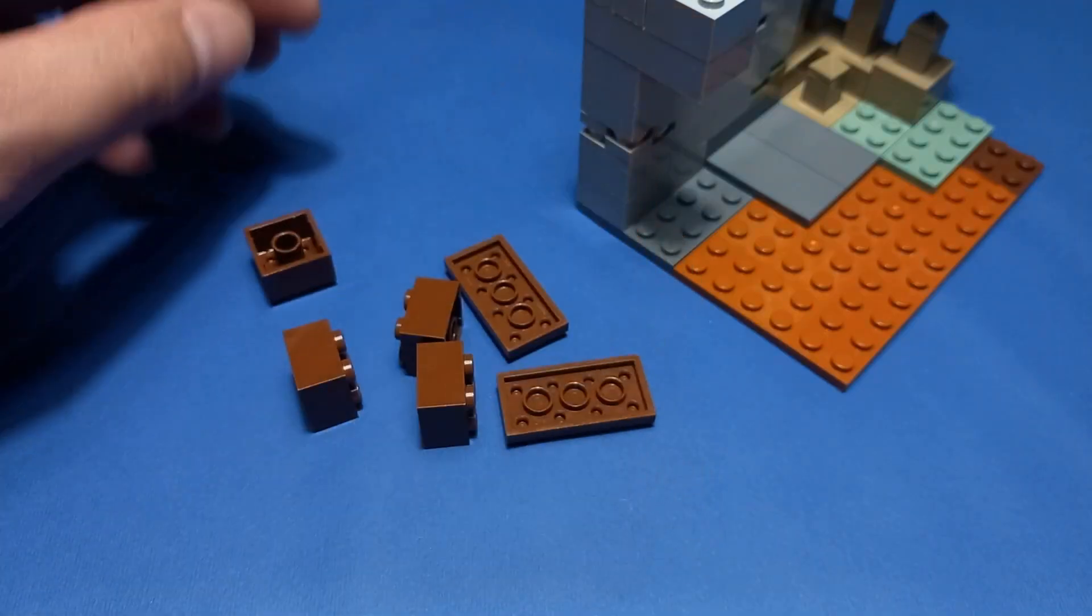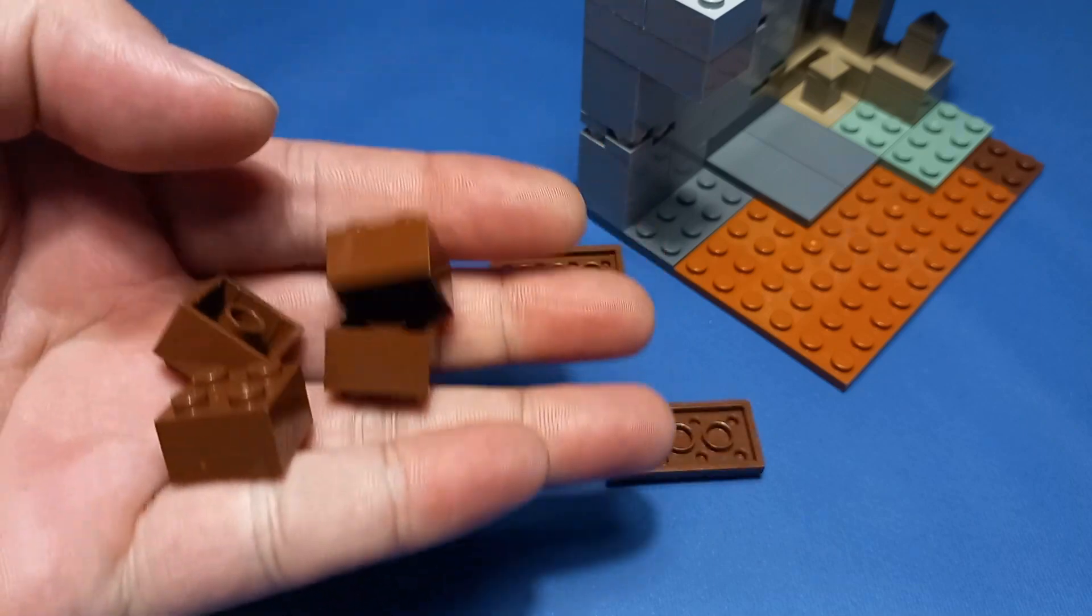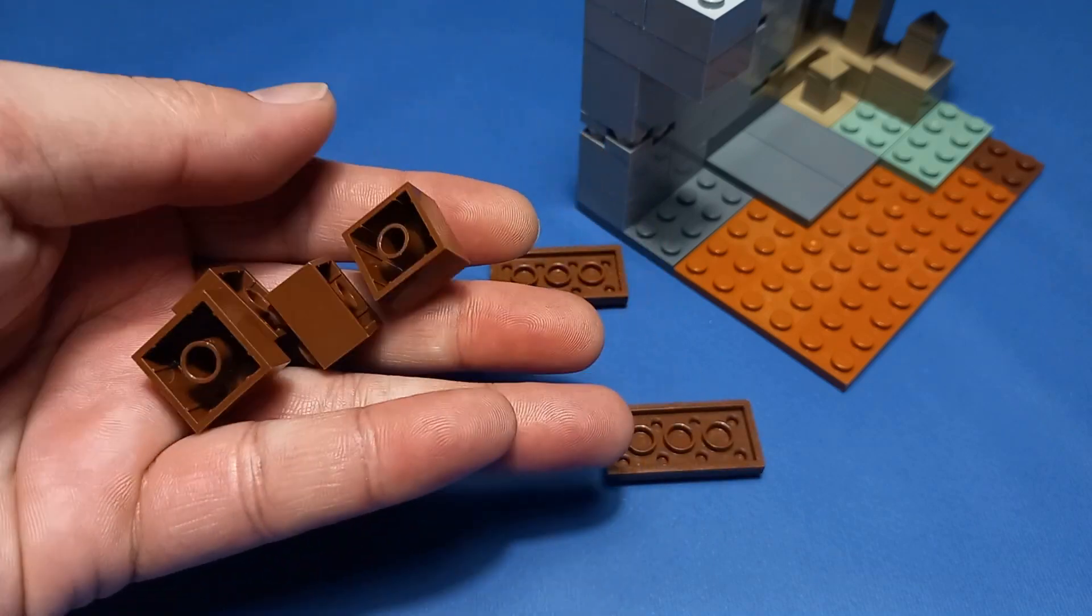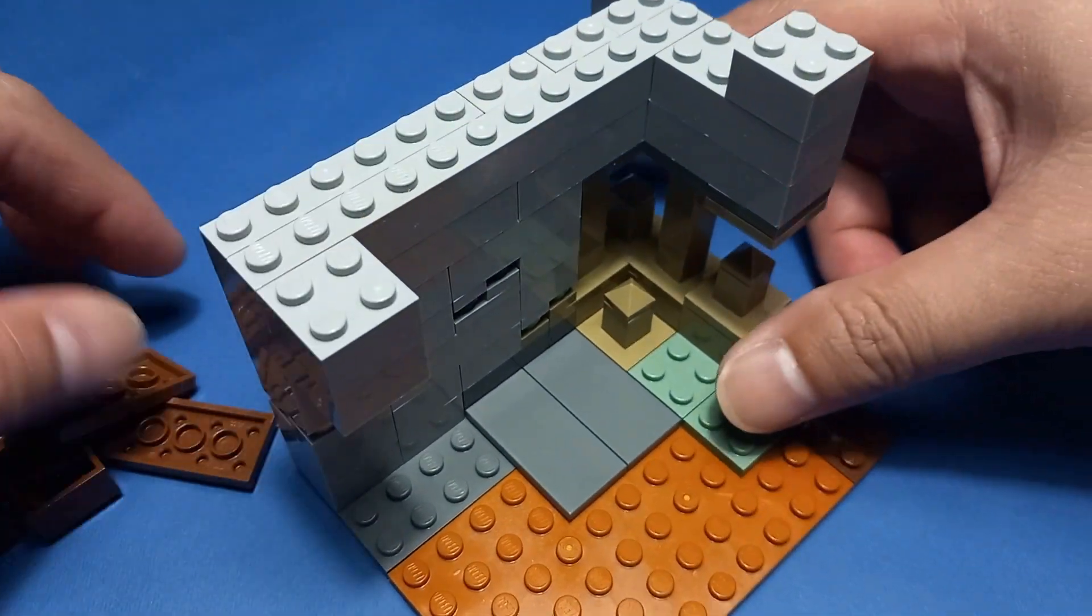This set only contains 4 pieces of 2x2 reddish brown bricks. So, I scrapped the idea to build a tree but instead used this as a dirt block to add more layers and details.